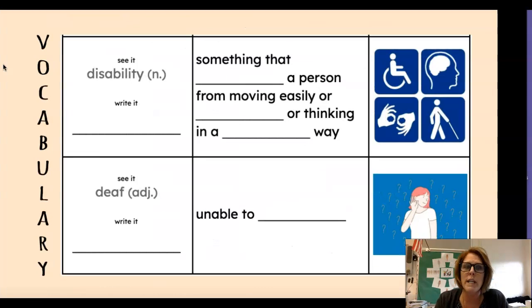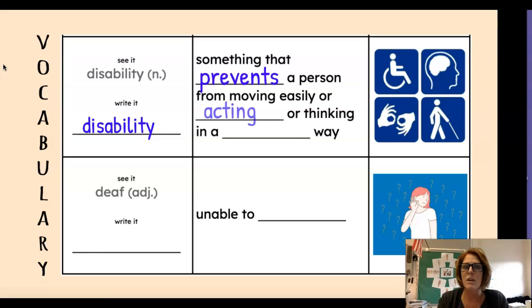Our first word is disability. Say it with me. Disability. It's a noun. Write it on the line. It's something that prevents a person from moving easily or acting or thinking in a typical way.